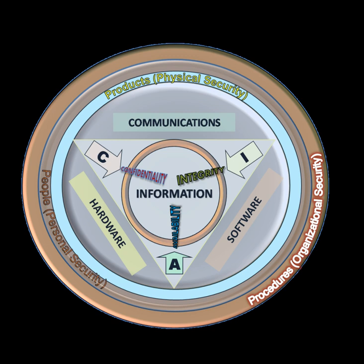Selecting and implementing proper security controls will initially help an organization bring down risk to acceptable levels. Control selection should follow and should be based on the risk assessment. Controls can vary in nature, but fundamentally they are ways of protecting the confidentiality, integrity or availability of information. ISO/IEC 27001 has defined controls in different areas. Organizations can implement additional controls according to requirement of the organization. ISO/IEC 27002 offers a guideline for organizational information security standards.